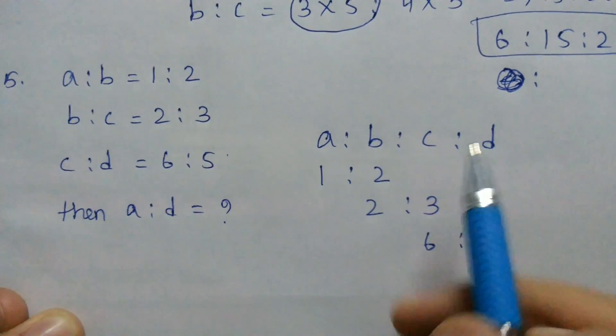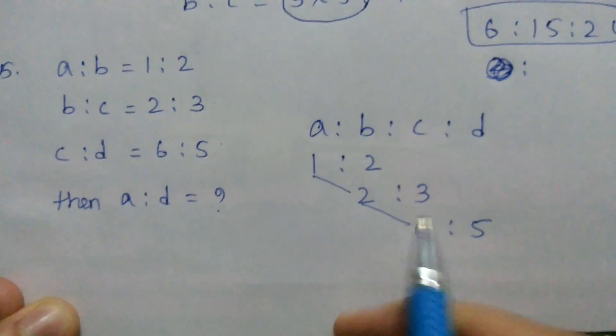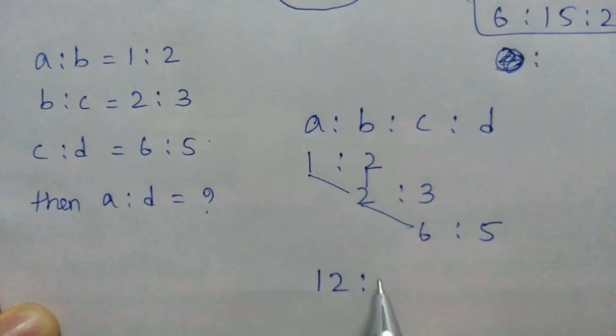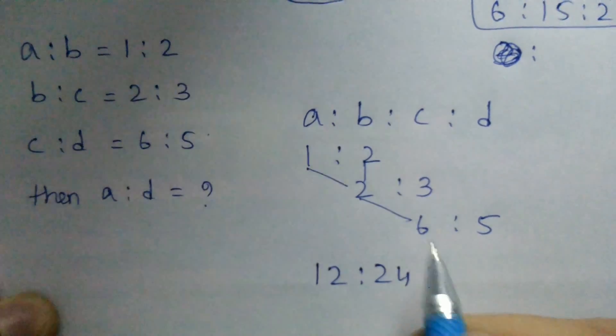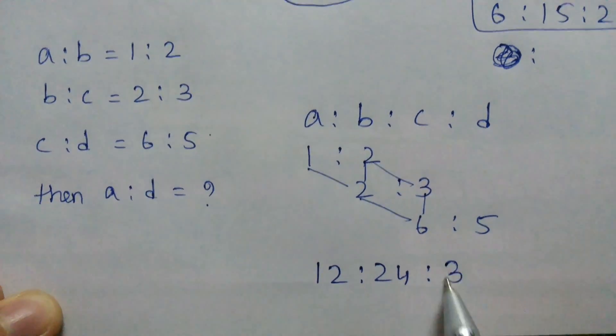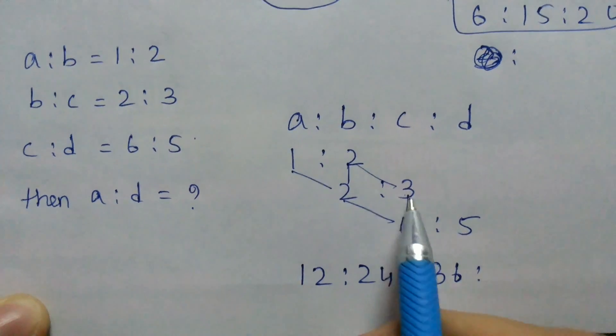Now he has asked us what is A is to D. So 1 into 2 is to 2, 2 is to 6 is to 12 is to 2, 2 is to 4, 4 is to 24 is to 2, 3 is to 6, 6 is to 36 is to 2, 3 is to 6, 6 is to 5 is to 30.